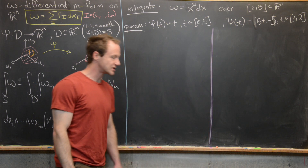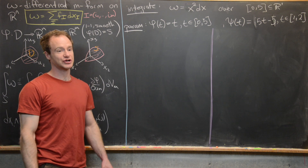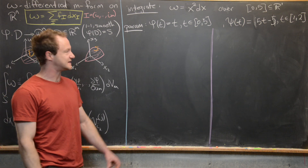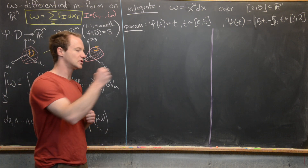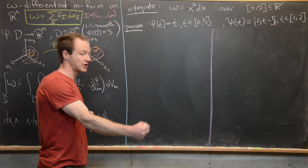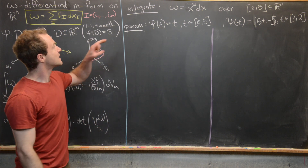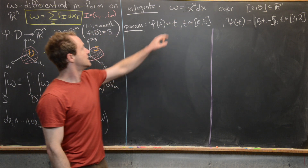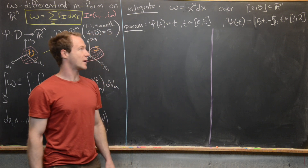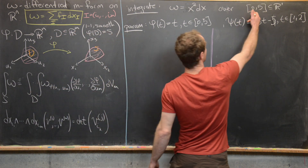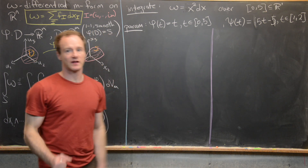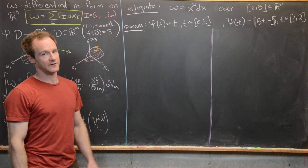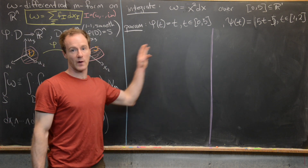So we want to apply this notion of an integral of a differential m-form to understand u-substitution more deeply. Let's start with an example, then do a little bit more in general, and then look at another more interesting example. We want to integrate the differential 1-form omega = x² dx over the one-dimensional hypersurface in R1, namely the interval [0, 5], parametrized two different ways.